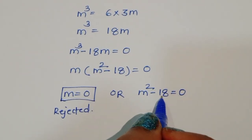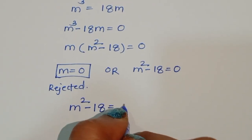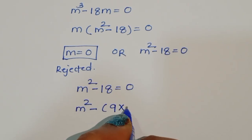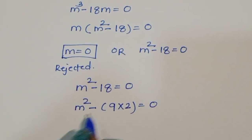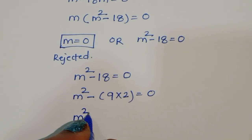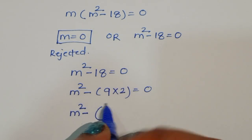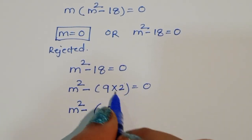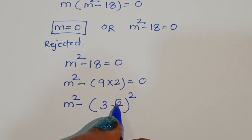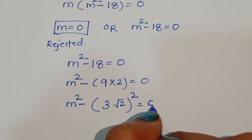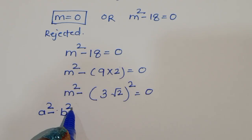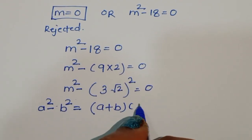The next equation is m squared minus 18 equals 0. We can write 18 as 9 times 2. This is square form, so we convert: 9 is 3 squared and 2 is (√2) squared, so we have m squared minus 3 squared times (√2) squared equals 0, which is the form of a squared minus b squared. The formula is a squared minus b squared equals (a plus b)(a minus b).